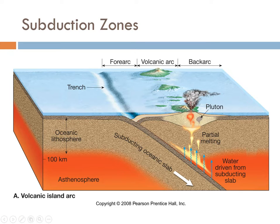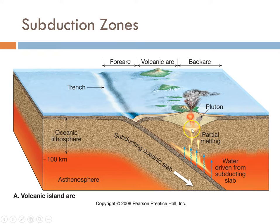These are the parts of a subduction zone. You've got the trench that marks right where those two plates meet. You also have a volcanic arc. This works for either ocean-ocean or ocean-continent settings. And then between the arc and the trench you have the forearc area — those are the places we're going to be focusing on.